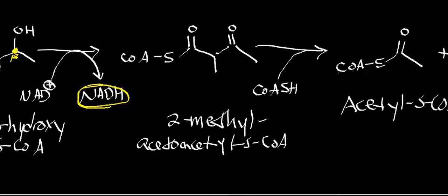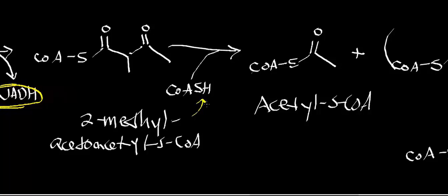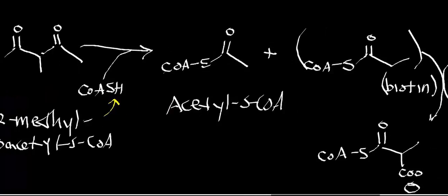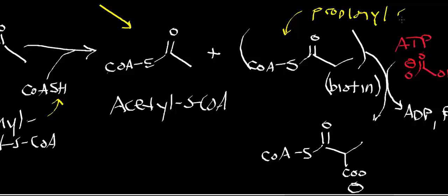2-methyl-acetoacetyl-CoA reacts with thiolase via a coenzyme A-dependent nucleophilic acyl substitution mechanism, giving two products: acetyl-CoA and propionyl-CoA. We've effectively taken isoleucine and degraded it to two things we know how to deal with — acetyl-CoA and propionyl-CoA.